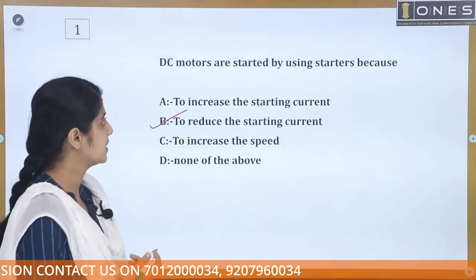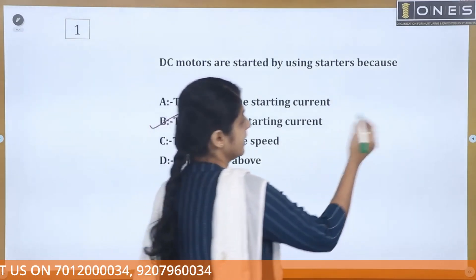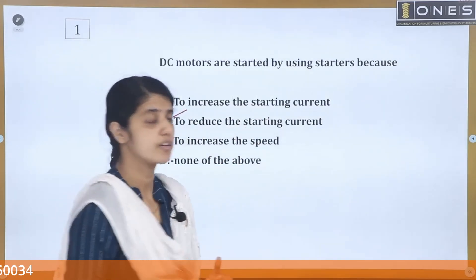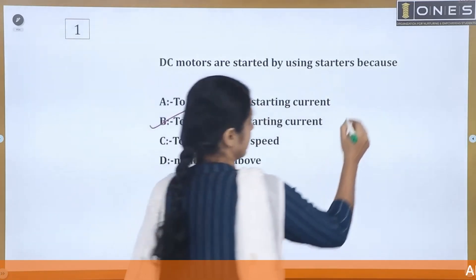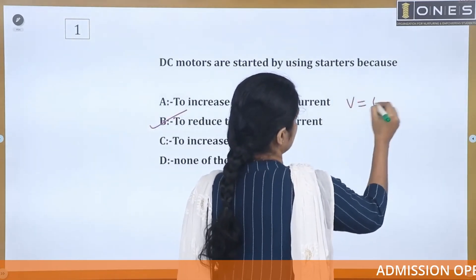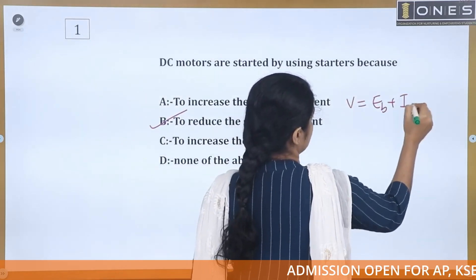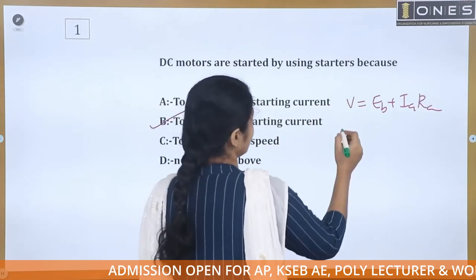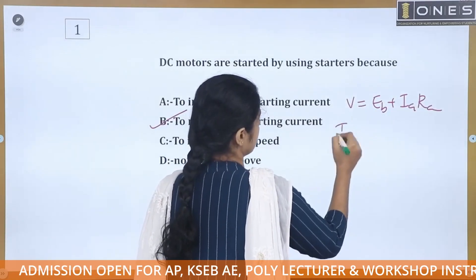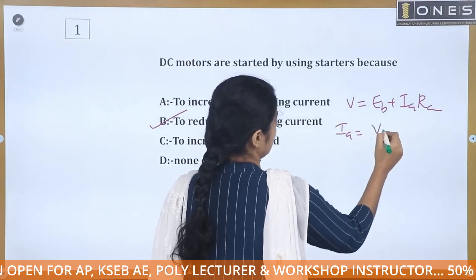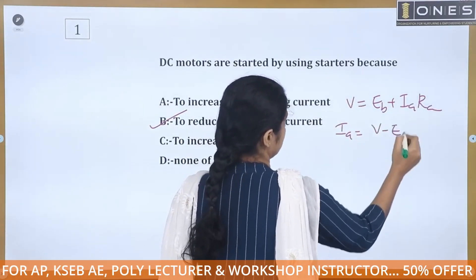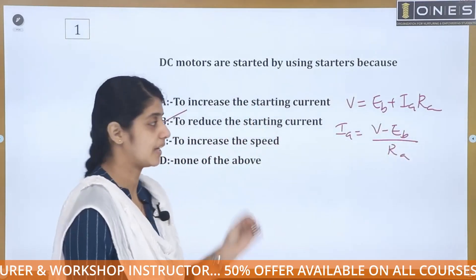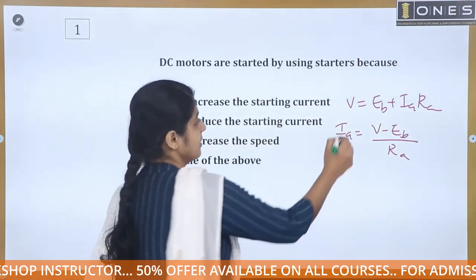To explain this, we need to take the voltage equation of a DC motor. The voltage equation is: V = Eb + Ia × Ra. From this, we derive the armature current: Ia = (V - Eb) / Ra.